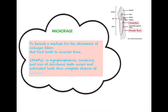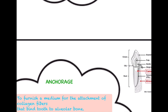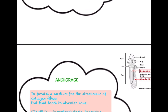Moving on to the third function of cementum: anchorage. The word itself indicates it is holding on to something. The function of cementum is to furnish a medium for the attachment of collagen fibers — it provides attachment to the Sharpey's fibers, basically furnishing a medium so that the tooth can properly bind to the alveolar bone. We can see the cementum, the alveolar bone, and the periodontal ligament — cementum furnishes a medium so that the fibers can be embedded into the tooth, directly binding it to the alveolar bone.